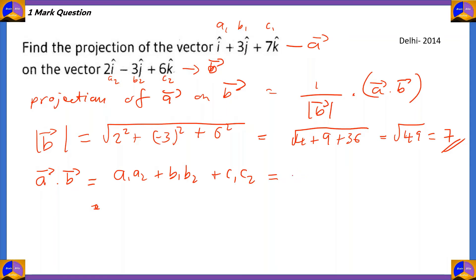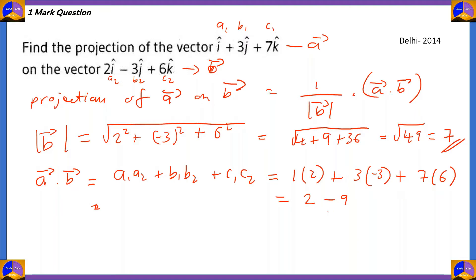Let's put in the values: a1 is 1, a2 is 2; b1 is 3, b2 is minus 3; c1 is 7, c2 is 6. So 1×2 = 2, 3×(−3) = −9, and 7×6 = 42. Therefore 2 − 9 + 42 = 35. So vector a dot vector b equals 35.